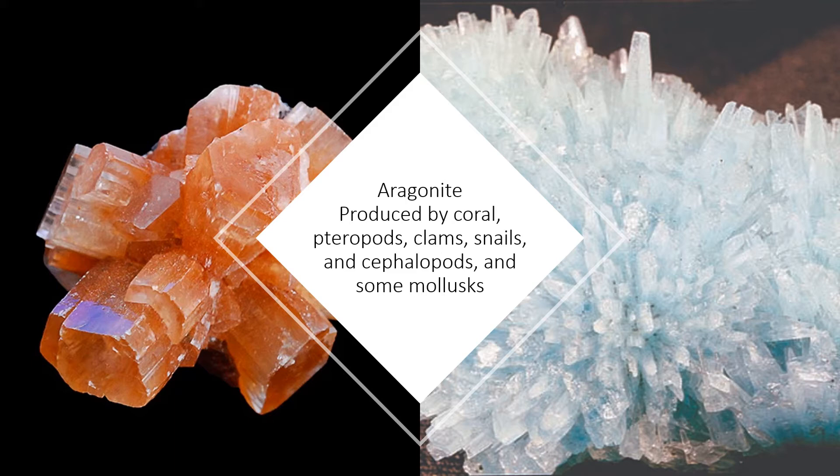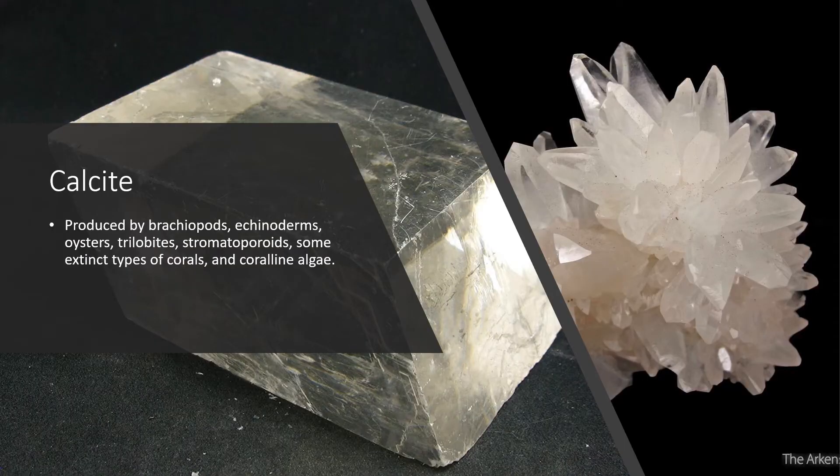Aragonite is produced by organisms such as coral, pteropods (a type of plankton also called sea butterflies), clams, snails, cephalopods, and some mollusks. Calcite, on the other hand, is primarily made by brachiopods, echinoderms, oysters, trilobites, stromatoporoids, some extinct types of corals, and coralline algae.